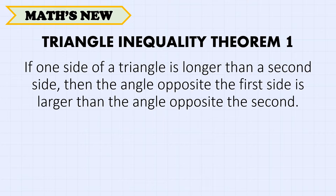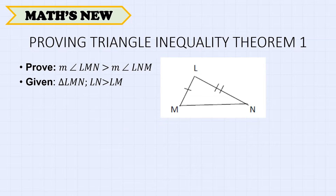The first theorem is Triangle Inequality Theorem 1, which states that if one side of a triangle is longer than a second side, then the angle opposite the first side is larger than the angle opposite the second. Let us now try to prove Triangle Inequality Theorem 1 by proving that the measurement of angle LMN is greater than the measurement of angle LNM.